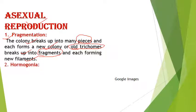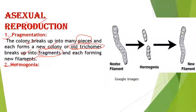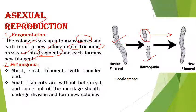This picture shows the structure of hormogonia. This is a Nostoc filament that breaks down into pieces, and each piece is called a hormogonium. Hormogonia are short, small filaments with rounded ends. These small filaments are without heterocysts. They come out of the mucilaginous sheath — mucilage is a slime-like substance present around the filament — and undergo cell division to form new colonies.